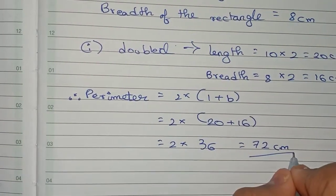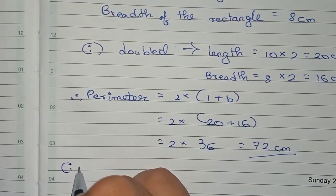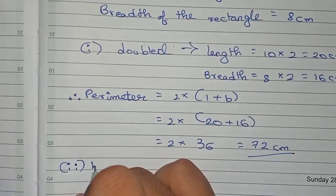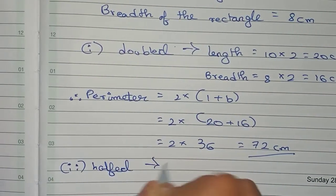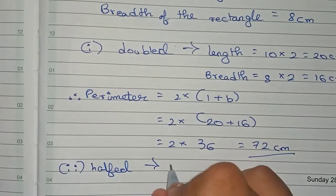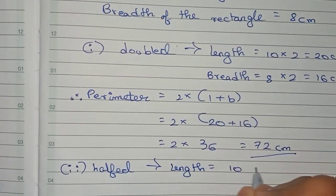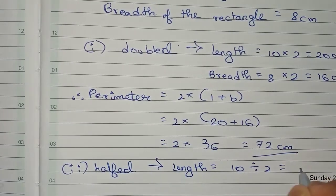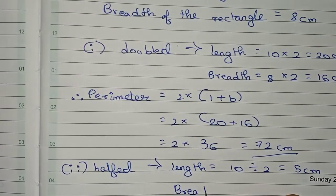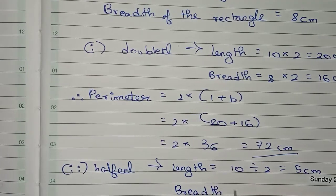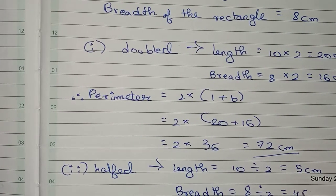So 72 centimeters is the answer when the length and breadth are doubled. Now number two: if it is halved, it will be divided by 2. So the length is 10 divided by 2, that is equal to 5 centimeters. And breadth is 8 centimeters, so 8 divided by 2, that is equal to 4 centimeters.